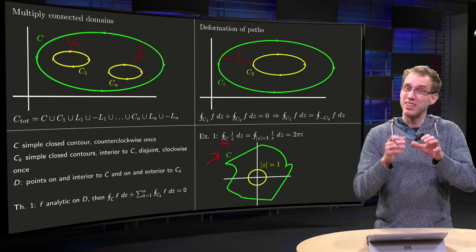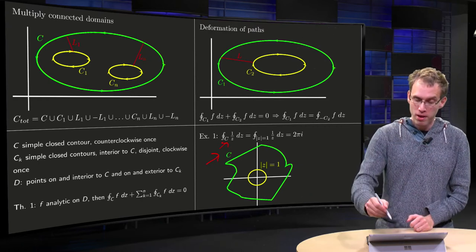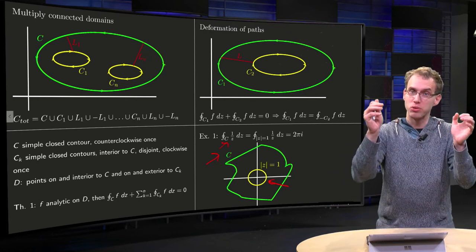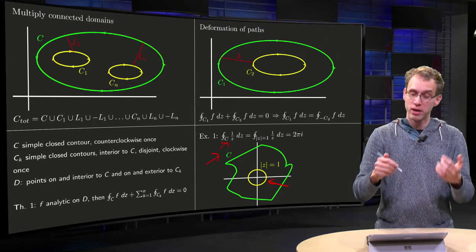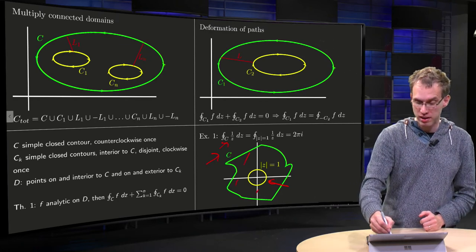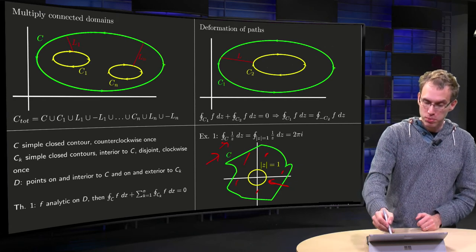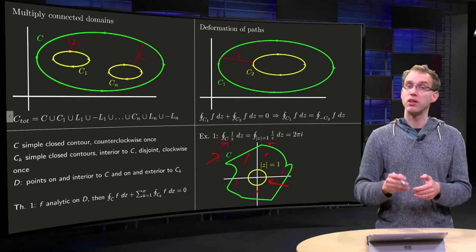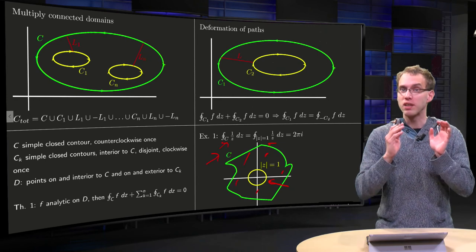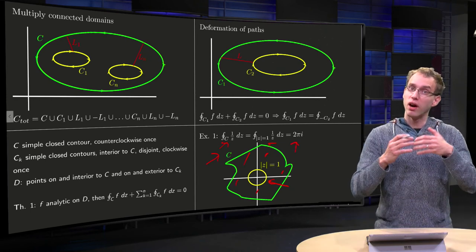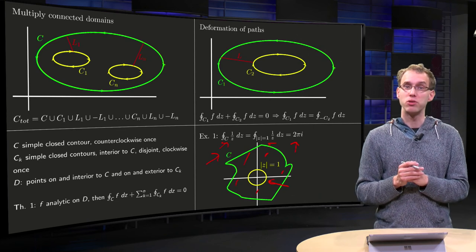So what can we do? We can choose a different contour. We take instead the unit circle, so we deform our strange contour to just a unit circle, and that's possible because our f is analytic everywhere over there. And instead we compute the integral of 1 over z along the unit circle, where I have done this countless times that integral equals 2 pi, so that means that also our original integral equals 2 pi.